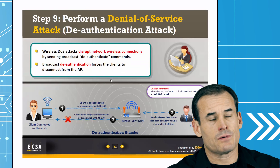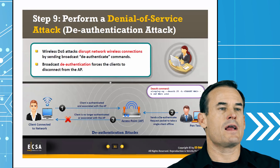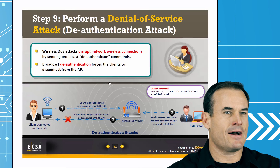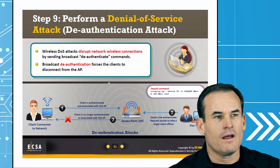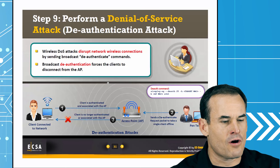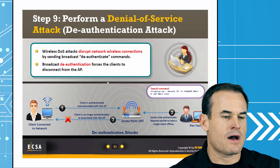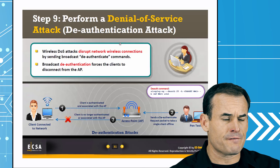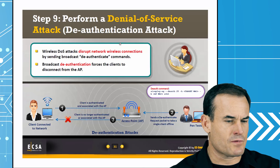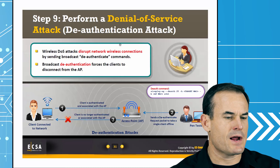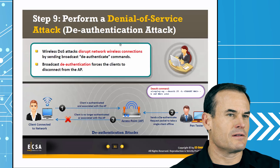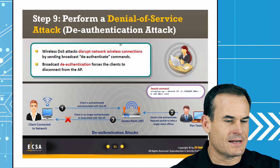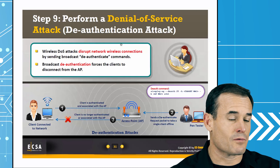Denial of service via de-auth floods: de-auth frames force a client to de-authenticate from the access point, and you can keep hammering them repeatedly with those de-auth frames. You're impersonating the legitimate access point, and the clients will re-associate but you just keep transmitting. This is a unique flavor of denial of service specific to wireless.